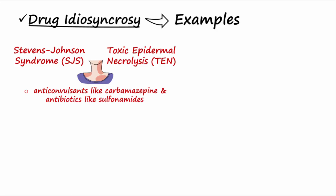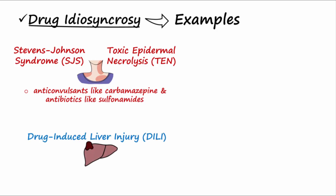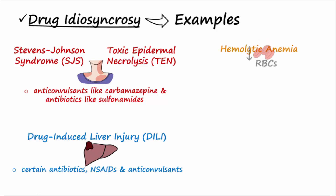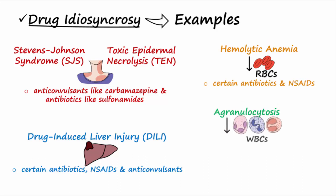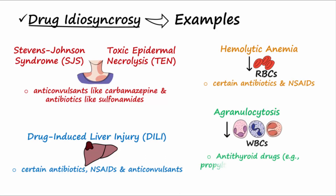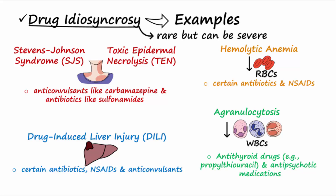Drug-induced liver injury may be caused by certain antibiotics, NSAIDs, and anticonvulsants. Hemolytic anemia may be induced by some antibiotics and NSAIDs. Agranulocytosis may be caused by antithyroid drugs and antipsychotic medications. Remember, these idiosyncratic reactions occur rarely, but can be severe.